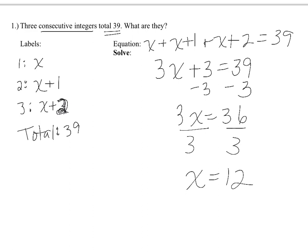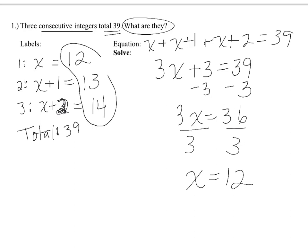So x equals 12 is the first integer, x plus 1 is 13, and x plus 2 is 14. We circle all three numbers as answers. You can check: 12, 13, and 14 are consecutive integers, and 12 plus 13 plus 14 equals 39.